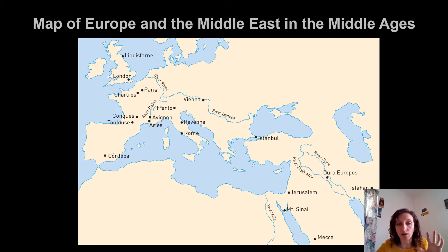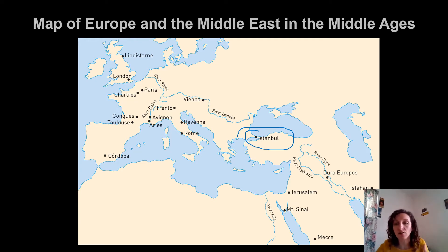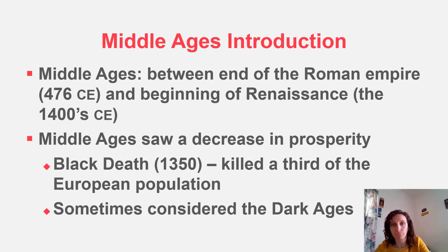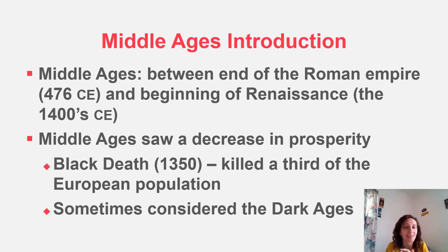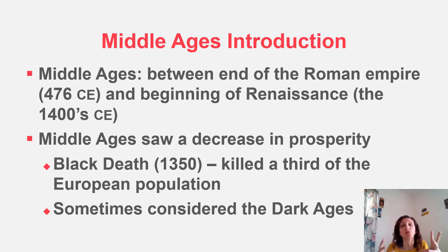This is a map of the area we're discussing today. We talked about Constantinople and the Eastern Roman Empire in a previous lecture, and also Islamic art. Now we're looking at what was happening in the West. Europe in this whole time span is often referred to as the Middle Ages — meaning the end of the Roman Empire and the beginning of the Renaissance. This was a time of very decreased prosperity; the Black Death killed one-third of the European population. It's sometimes called the Dark Ages, partly due to the vacancy of unified Roman leadership.